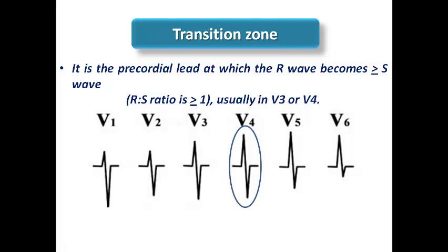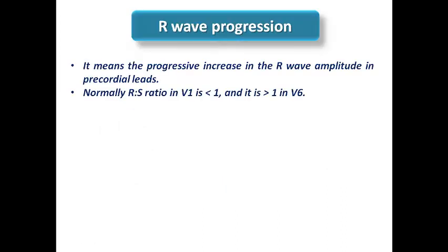Understanding the transition zone allows us to understand R-wave progression. R-wave progression means the progressive increase in R-wave amplitude in precordial leads. Normally, for example, the R-S ratio in V1 is less than 1, and then it is more than 1 in V6. This is the normal R-wave progression we have seen in ECG interpretation and in the Schimperlin ECG rules.